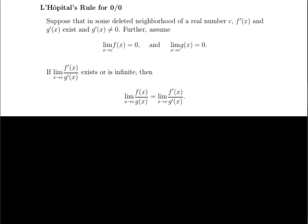In the previous video, we introduced L'Hôpital's rule for indeterminate forms in which we're investigating the ratio of the limit of f(x) over g(x), in which the top goes to zero and the bottom goes to zero. L'Hôpital's rule says that this limit is equal to the limit of the derivatives.